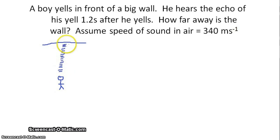So his yelling creates disturbance. Those oscillations propagate towards the wall. They get reflected and they come back. This is how an echo works. Now we know that the time it takes for that sound wave to get to the wall and back again is 1.2 seconds. But we want to know how far away the wall is. So we need to know the time it takes for that sound wave just to reach the wall. And that will be half the total time, which is 0.6 seconds.